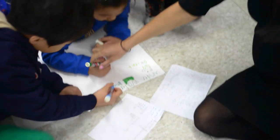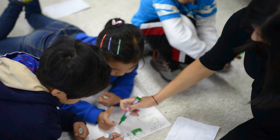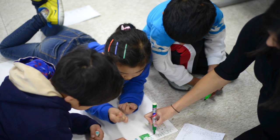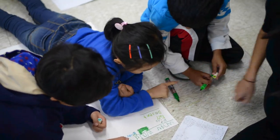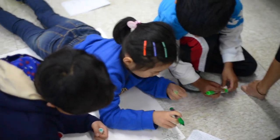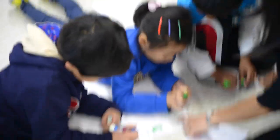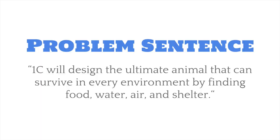Next, we placed the students in groups and had them list all the external parts animals would have in different habitats. Using the most significant need and insight, the class developed this problem sentence: 1C will design the ultimate animal that can survive in every environment by finding food, water, air, and shelter.